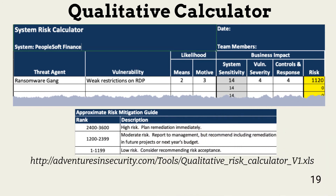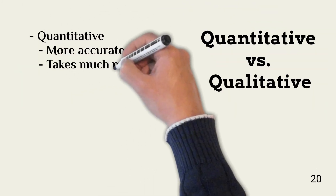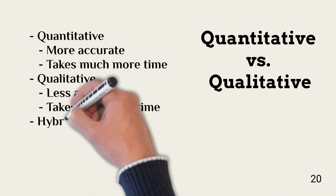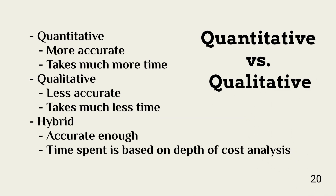You can download this calculator from adventuresinsecurity.com/tools/qualitative_risk_calculator_v1.xls. Deciding whether to use the quantitative or qualitative approach largely depends on management's willingness to spend the time necessary to calculate all related costs per incident, per system. None of the organizations for which I have worked, small to large, were willing to do this. Consequently, I always performed a qualitative or hybrid assessment based on management's involvement.